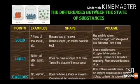Now, here the table is given. Let us differentiate between the states of substance. Solid, example: a piece of iron. Shape: it has a shape of its own. It retains shape, no matter how it is kept. Volume: it has a definite volume. Solids like sugar, sand, when poured on a flat surface form a heap.